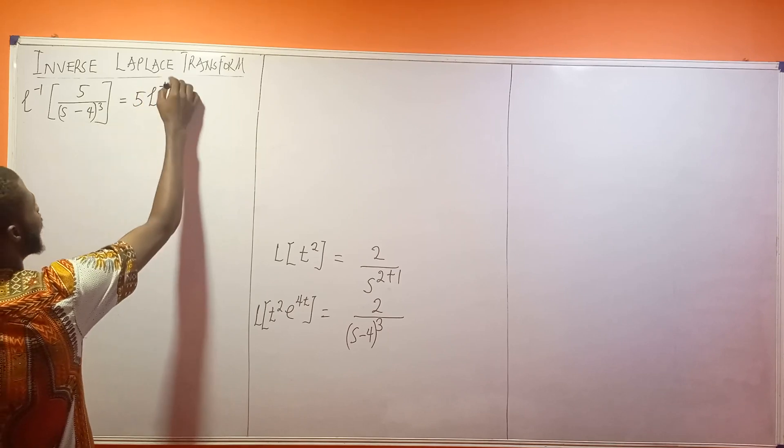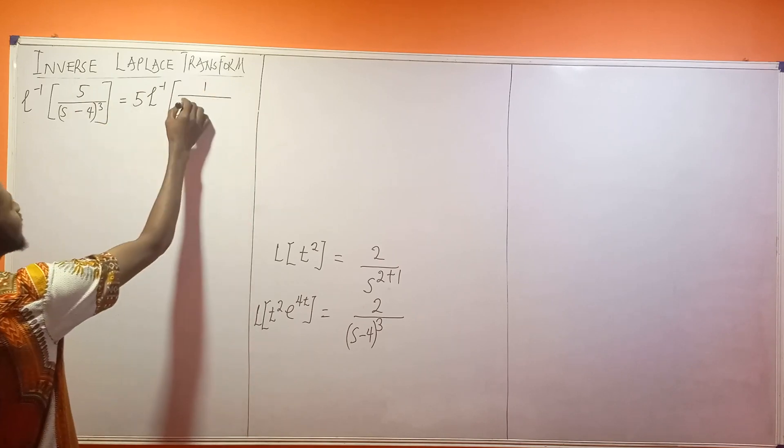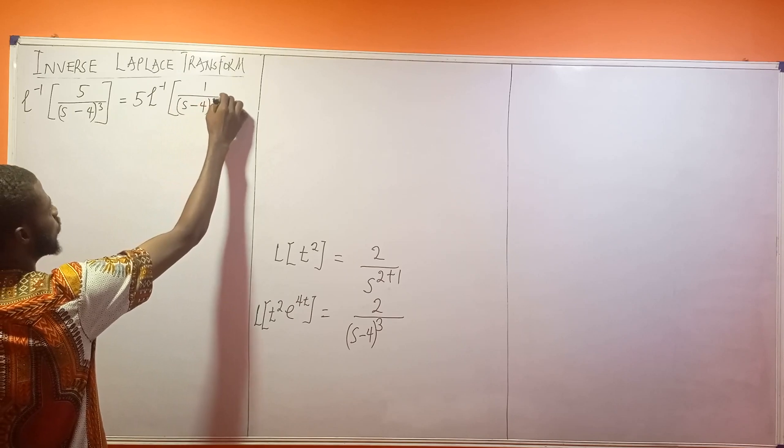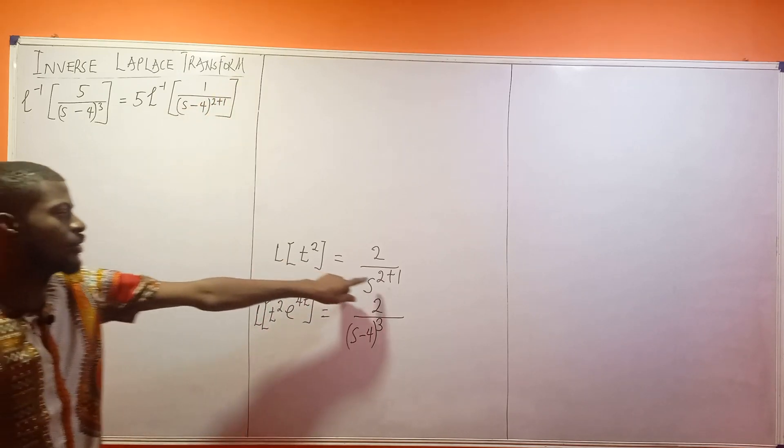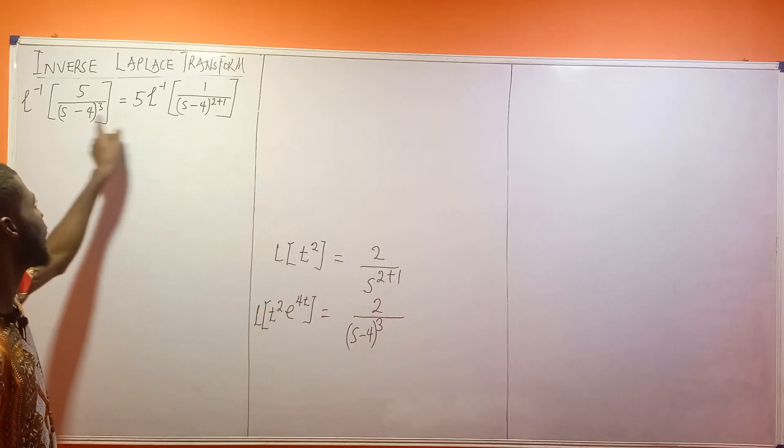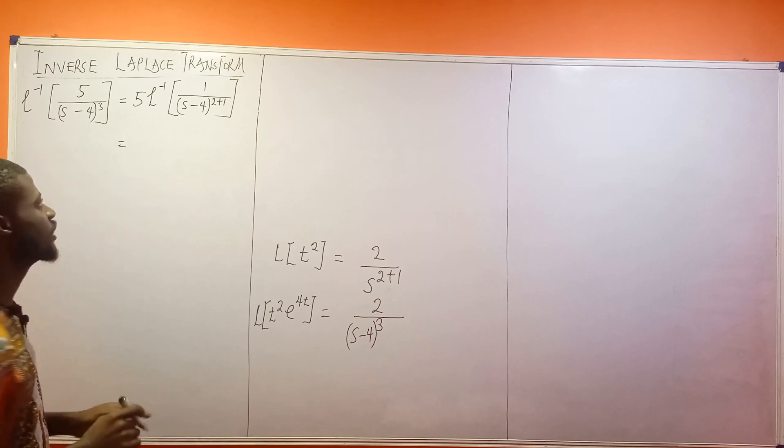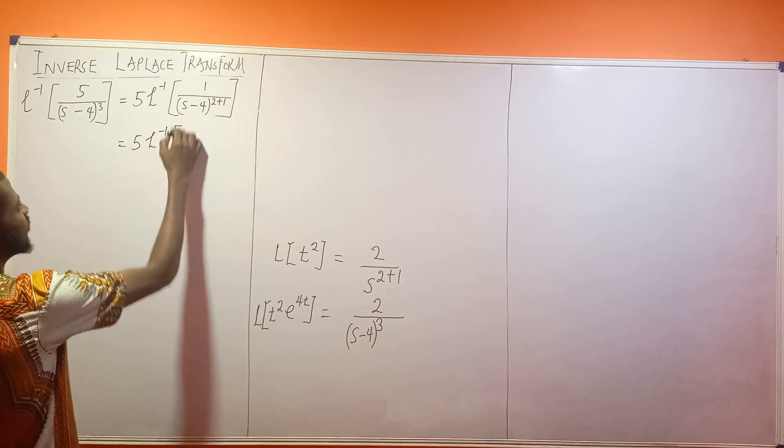Inverse Laplace of what will be left here? 1 divided by (S minus 4) to the power of 2 plus 1. So that it will be looking like the t formula. 2 plus 1, that is why it became 3. So we'll have 2 plus 1 here. Let us proceed. This is 5 times...